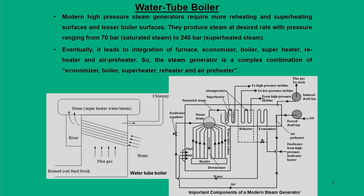Let us revisit what we discussed in our last lecture — the water tube boiler. A water tube boiler has important components like steam drum, superheater, reheater, economizer, air preheater, and of course headers, downcomers, and risers. The main aspects of today's lecture focus on three important parts: superheater, reheater, and economizer, with the steam drum also being part of it.